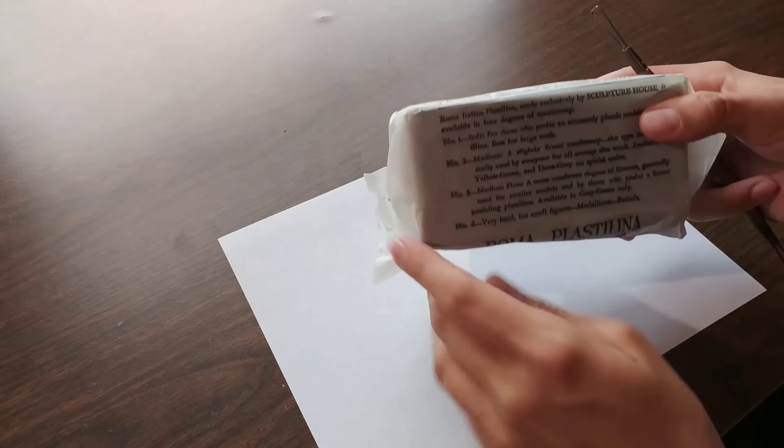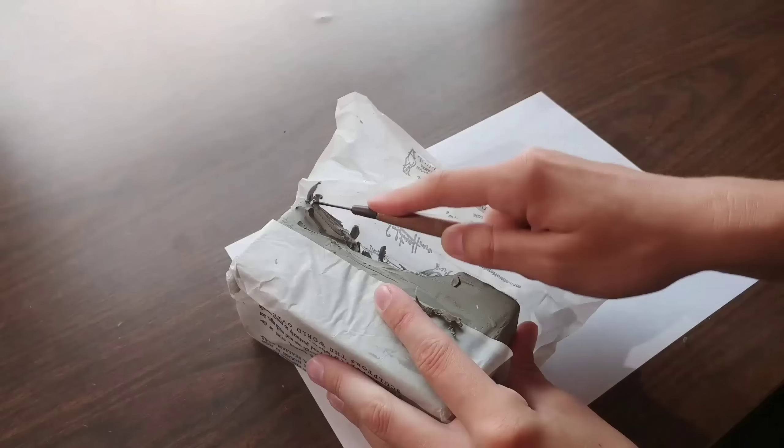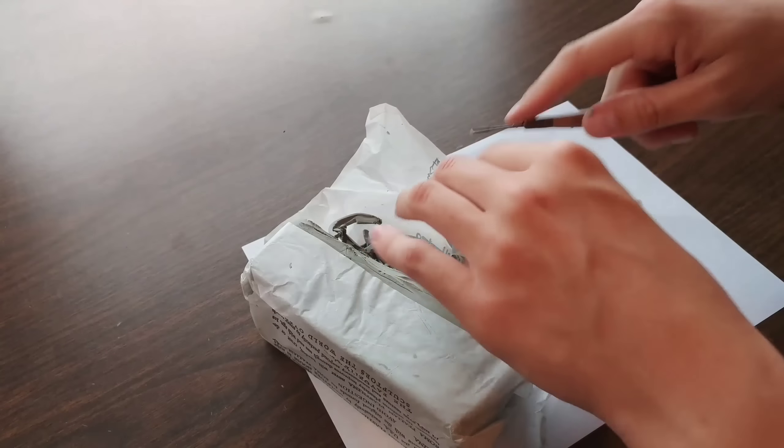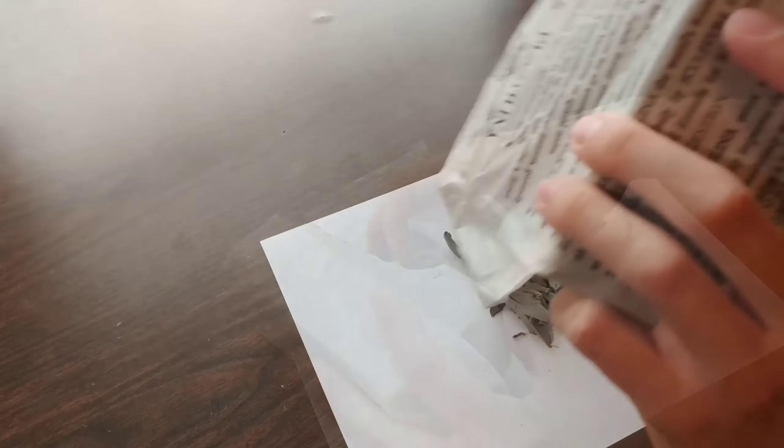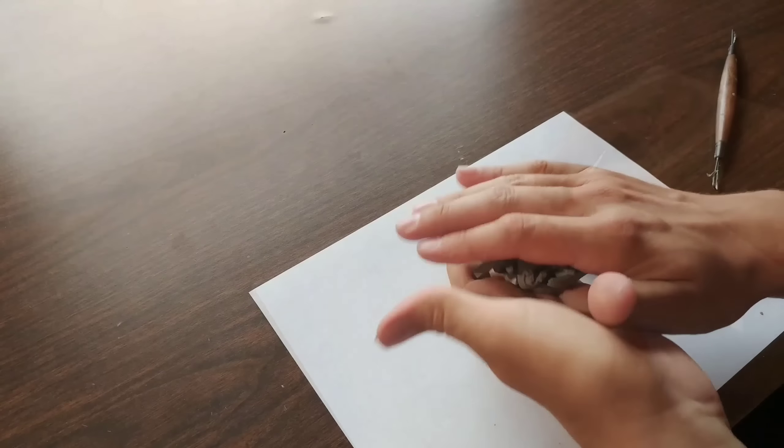First put down a piece of paper so you don't get the oily clay all over your desk. I use Roma Plastilina oil-based clay at number one because it's the softest. I'll put a link in the description of where to get this clay. So go ahead and shave off enough, just a handful.